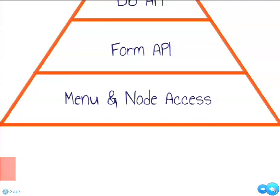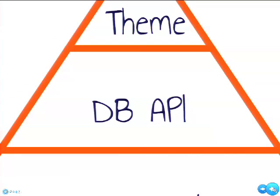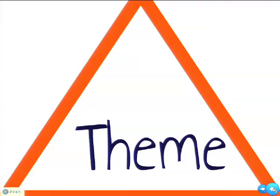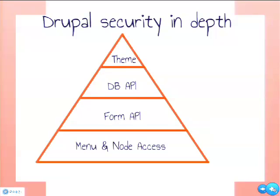Take a look at menu and node access — by that you control who accesses your nodes and your administration interface. When you pass that, you come to Form API, which protects against cross-site request forgery. Then the database API protects against SQL injection. And the last step — probably the most important — is the theming or rendering layer, which handles functions that output user input and takes care of cross-site scripting. That's Drupal security in layers, and it's very important to understand it's not just about one thing.